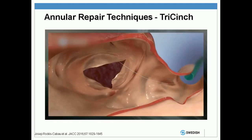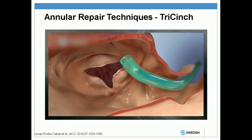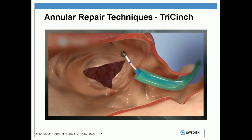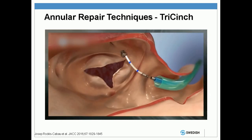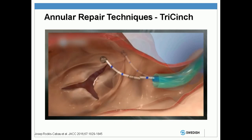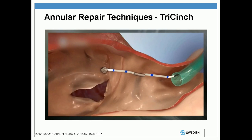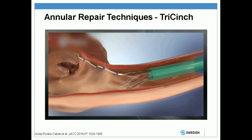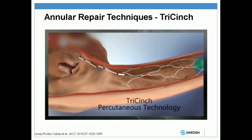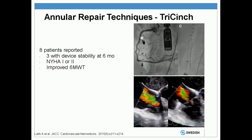This is a video simulation of the procedure. Here's the corkscrew going into the annulus just at the anterior-posterior commissure. This is the connecting device used to pull it down onto the stent. You can see the annulus being pulled. It can be confirmed on TEE to make sure it's appropriately placed, and then the stent is deployed securing it. It's also important to know exactly where the right coronary artery is, so coronary angiography should be performed. You can confirm the anchor is not in the right coronary artery. There have been eight patients reported, with device stability in three patients out at six months and symptomatic improvement, although TEE before and after shows there's still significant TR remaining.